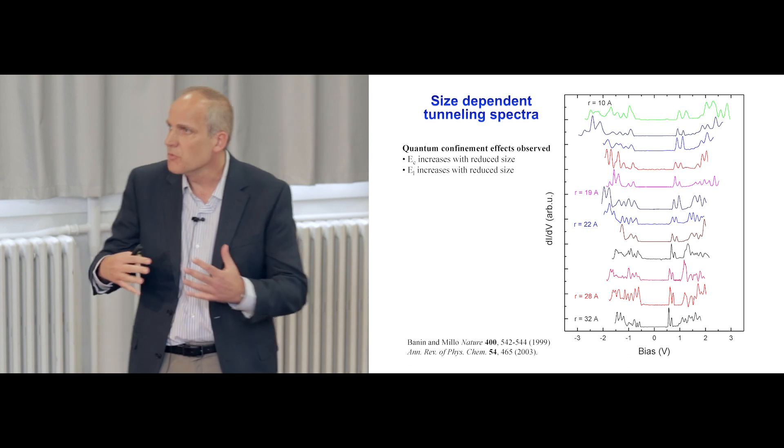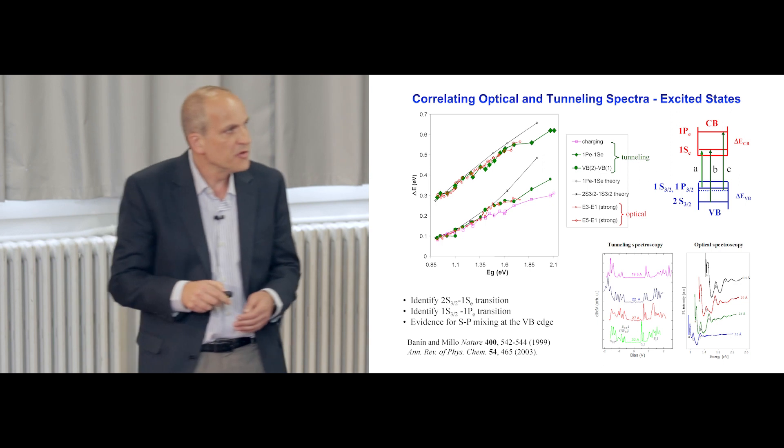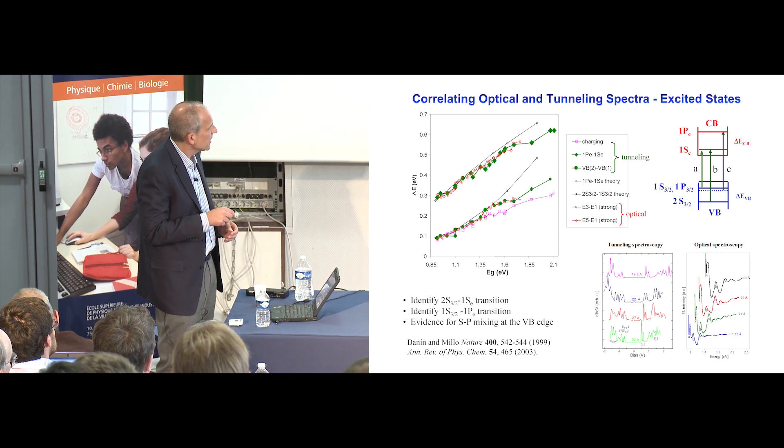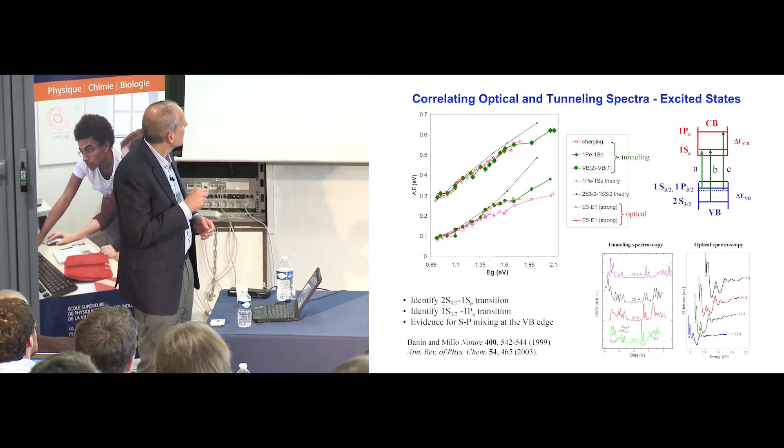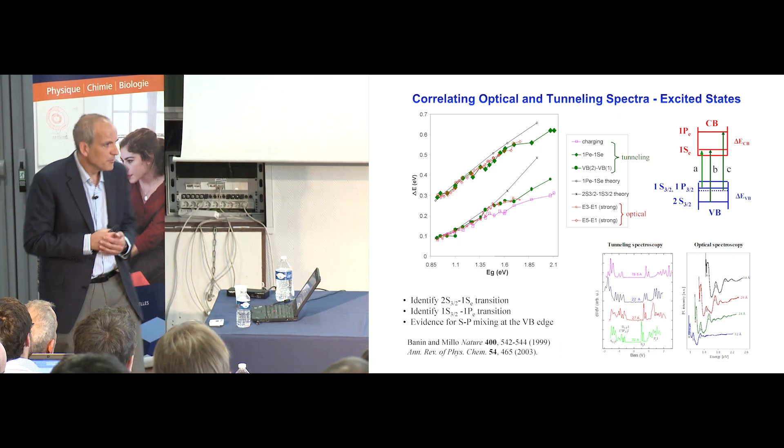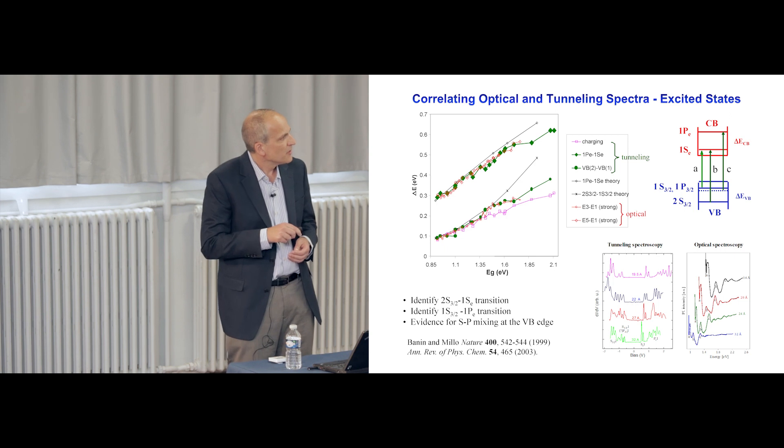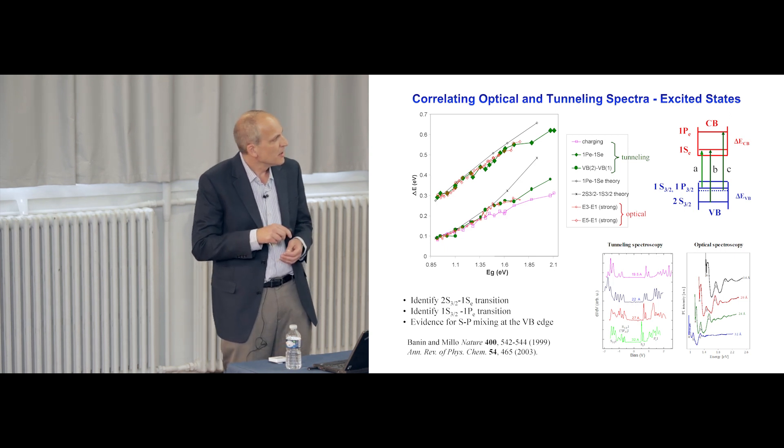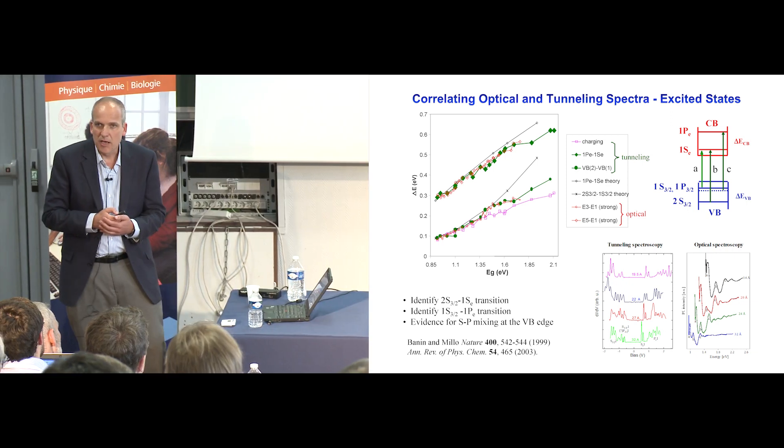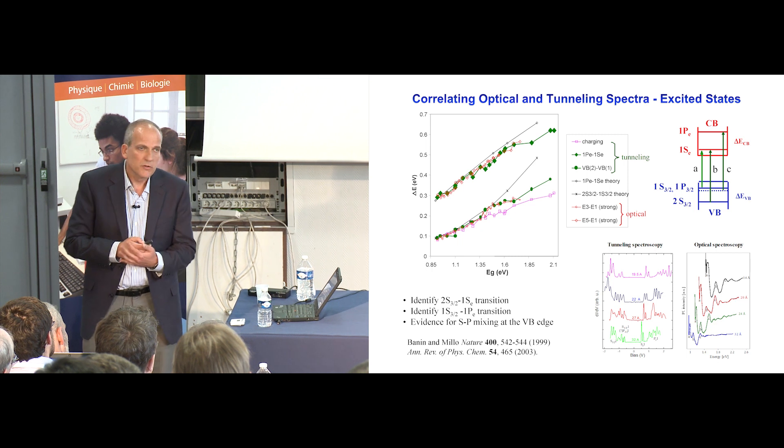Now, you can combine these two together. And that's also very powerful in order to assist in actually proving level assignment between optical transitions, which are actually transitions between conduction and valence band states. This kind of assignment really allowed us, for example, to identify the 2S3/2 1SE transition, also to identify the 1S3/2 1PE transition, namely that we have quite strong evidence for SP mixing at the valence band edge of these kind of nanocrystals. And we followed up on this with further work over the years.